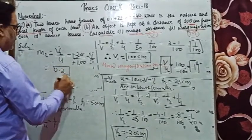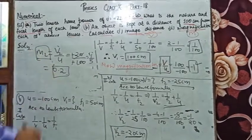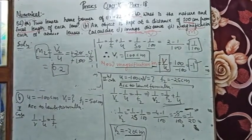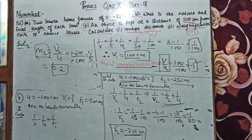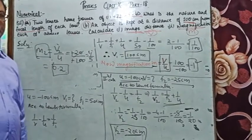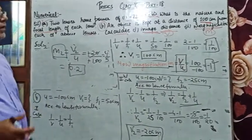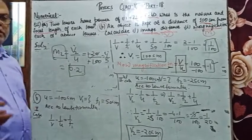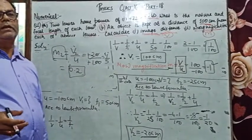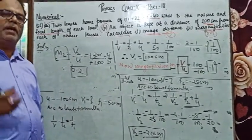The magnification of the second lens is 0.2. You can determine the nature of the lens, find the image distance, and calculate the magnification.